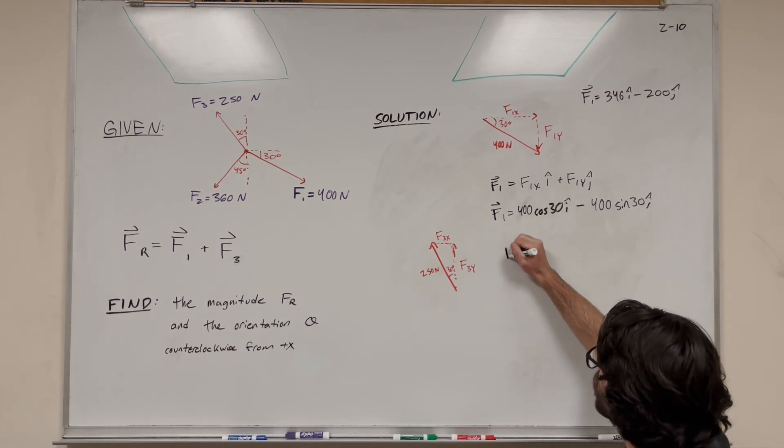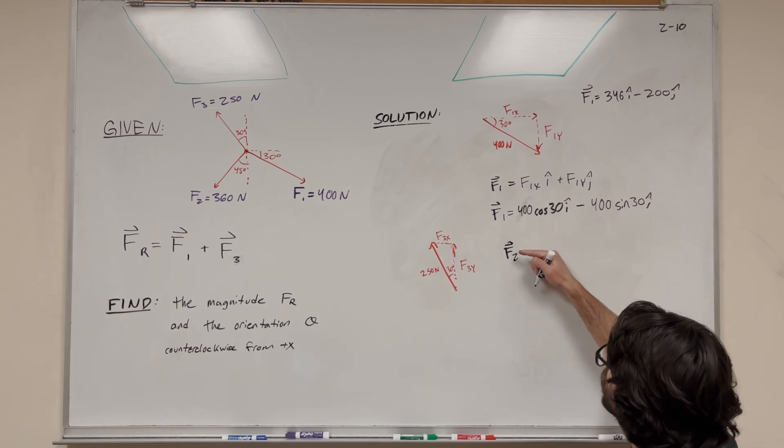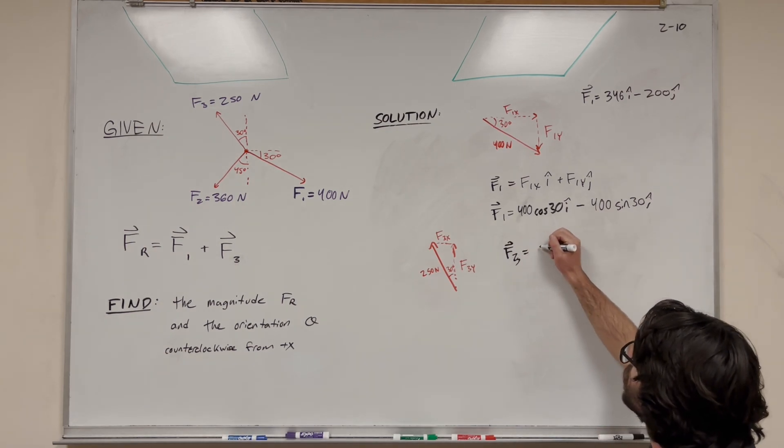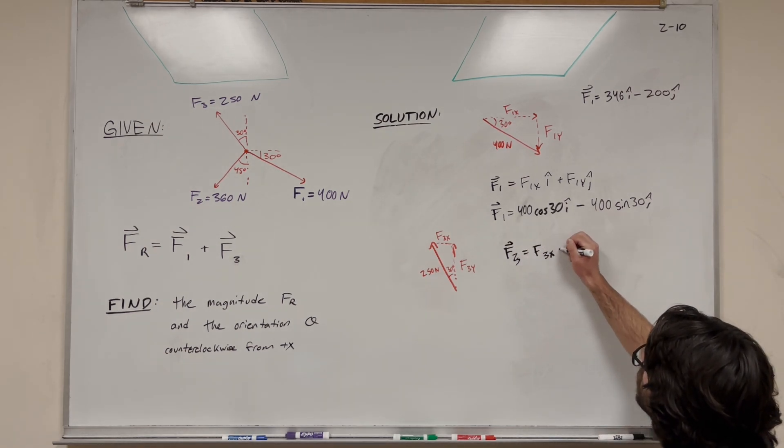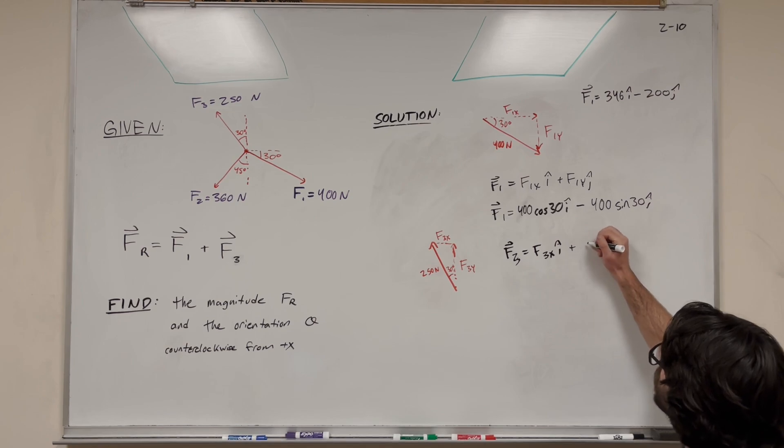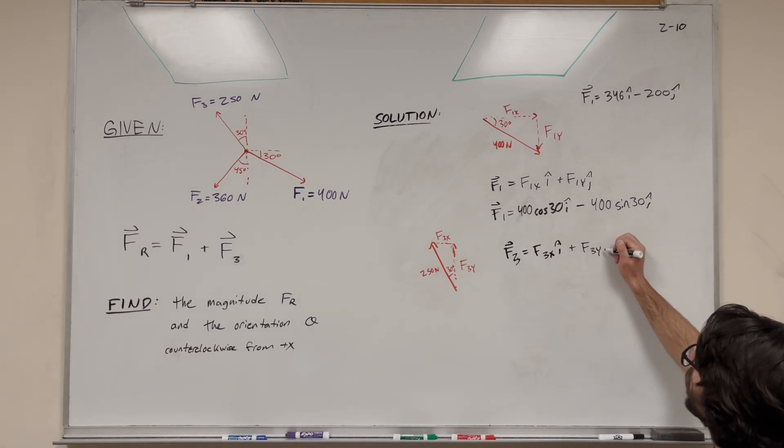F3 is similar. F3 equals F3x times i, the i component, plus F3y times j, the j component.